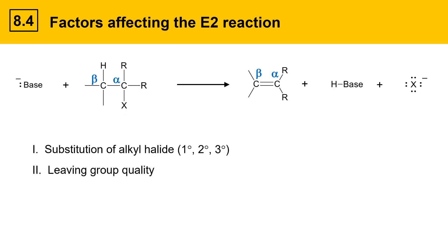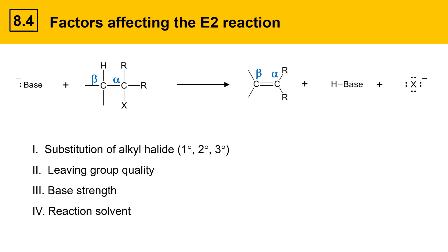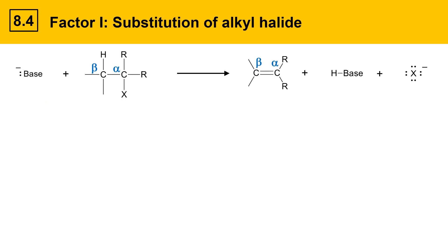The next factor is leaving group quality — how good of a leaving group is this X group? The third factor affecting E2 elimination reactions is base strength — how strong of a base is this? And then the fourth factor is reaction solvent — what are the reactants dissolved in?